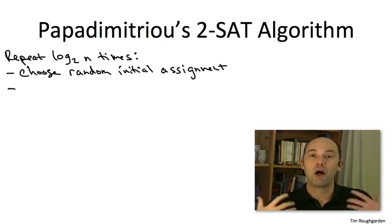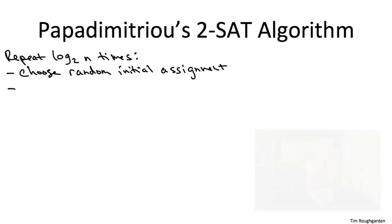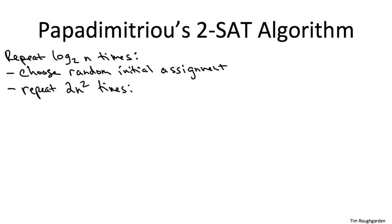One obvious motivation for that is if we want a polynomial time algorithm, this will ensure that the algorithm will not run for too many steps. So the magic number which will motivate when we analyze the algorithm is 2n squared. That's how many variable flips we're going to make before we give up and return to the next independent trial in the outer for loop. Remember, n denotes the number of variables.